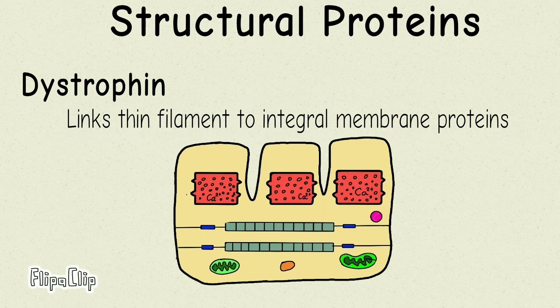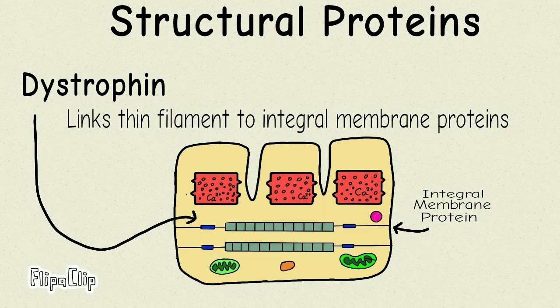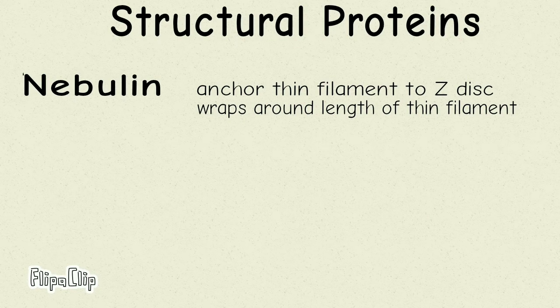The myofibrils are attached to the membrane using some proteins — this is where dystrophin comes in. It links the thin filaments present in the myofibrils to the integral membrane protein on the sarcolemma of the muscle fiber. And finally there is nebulin. Nebulin anchors the thin filament to the Z-disc and also wraps around the entire length of the thin filament. These four proteins together maintain the structure of a muscle.